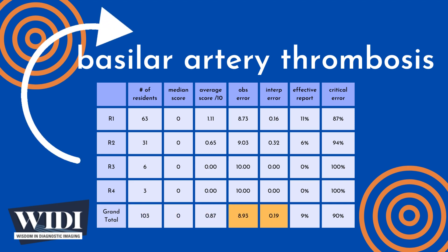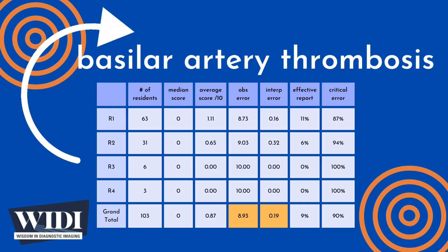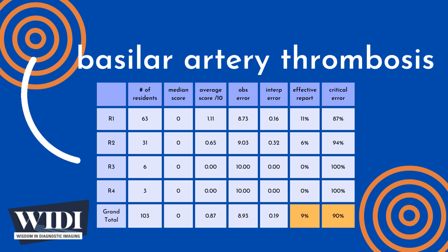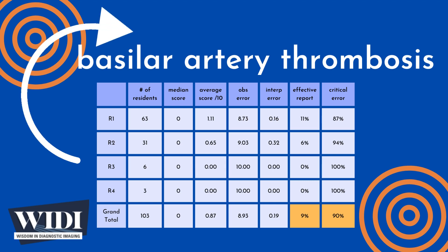Overall, the average number of points lost out of 10 due to observational discipline was 8.93. At the same time, 0.19 points were lost due to interpretive error on the part of the residents. We define an effective report to be one which achieves scores between 7 and 10 — in terms of letter grades, this would be A and B.